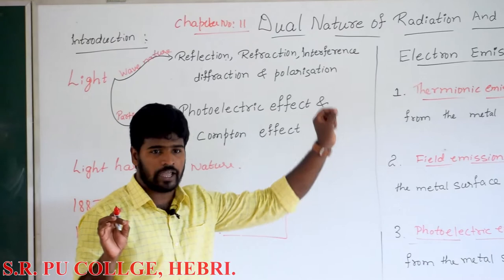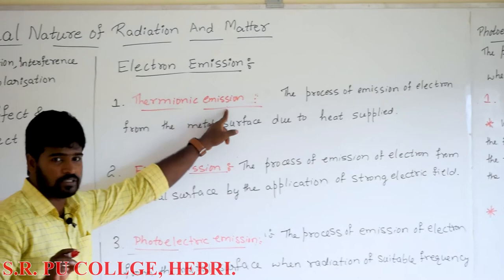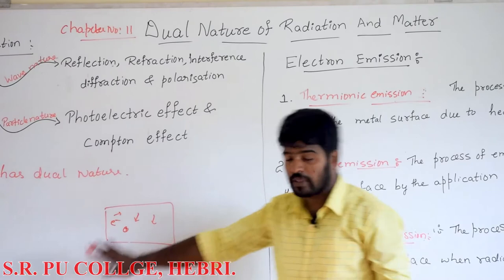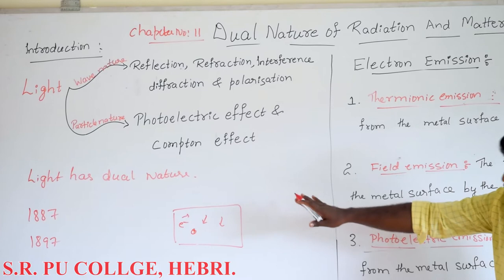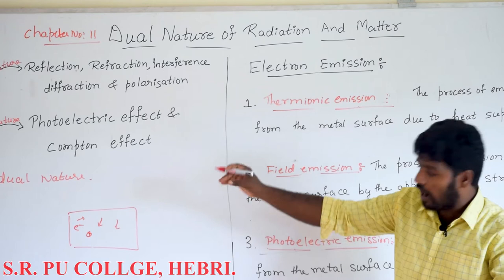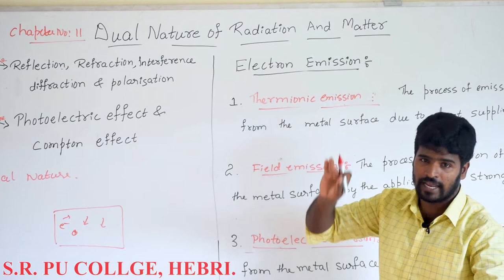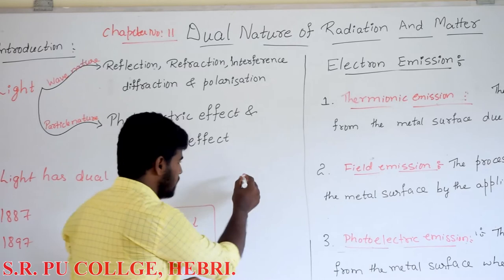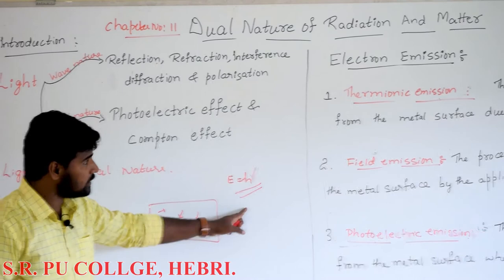Electron emission: the emission of electron from the metal surface is called electron emission. In general, if we consider a metal, there is a presence of a large number of free electrons, and all these free electrons are held inside the metal due to the strong attractive force of the ions. In order to overcome that, we provide an external source of energy such as heat, electric field, or light photon with energy E equal to H-nu, where E is energy, H is Planck's constant, and nu is the frequency of radiation.